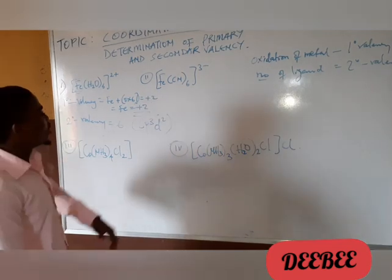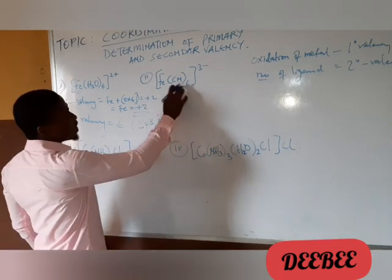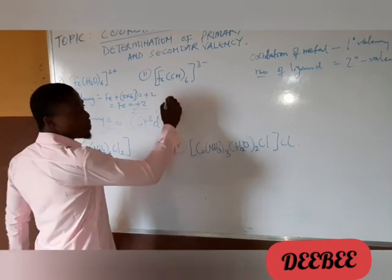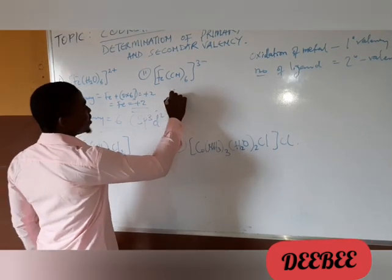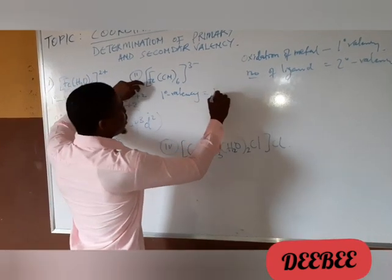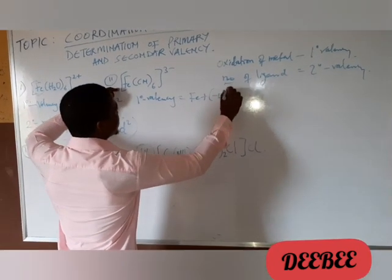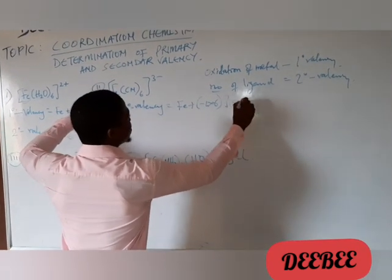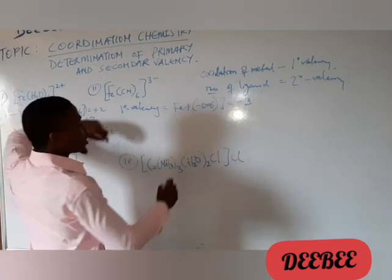And here, we have an ion. We have hexacyano ferrate 3. So from here now, our primary valence. Our primary valence, we have Fe plus minus 1 times 6 equals minus 3. The formal charge of the complex.